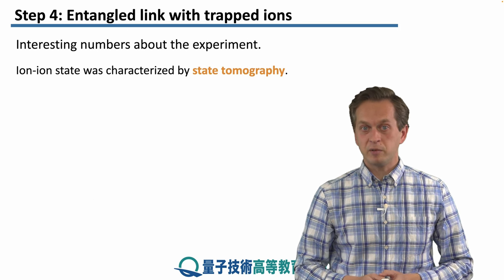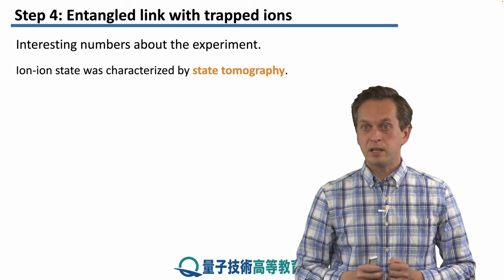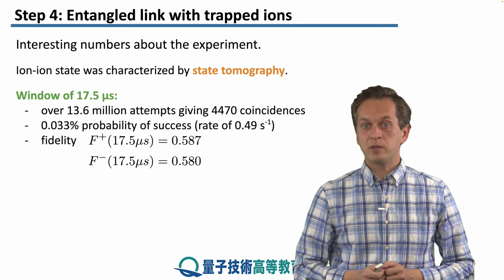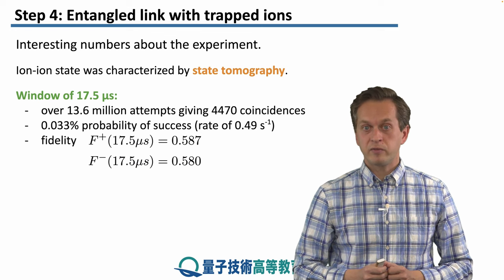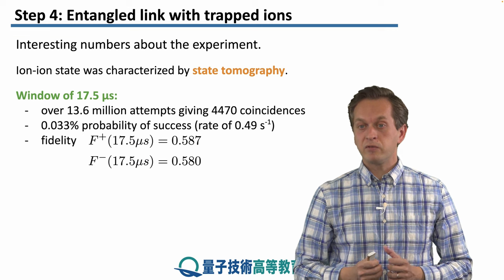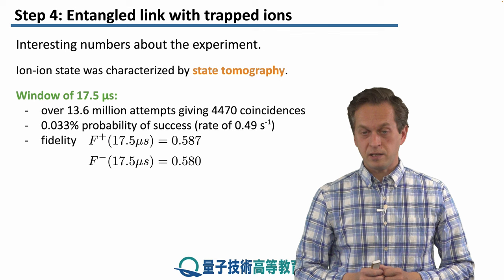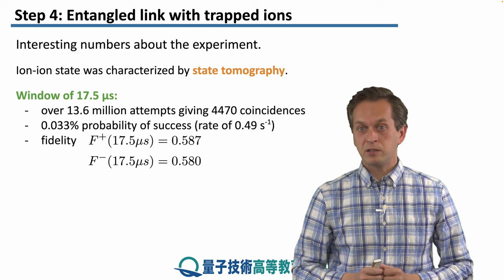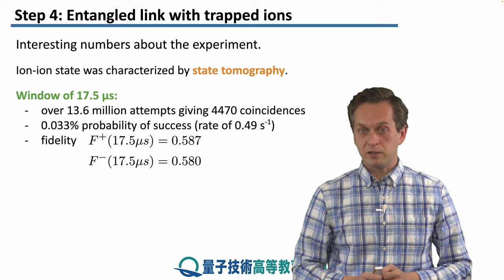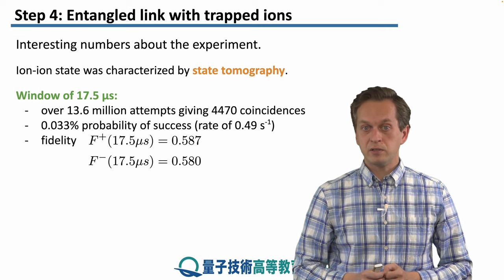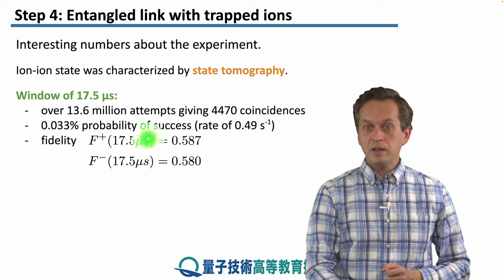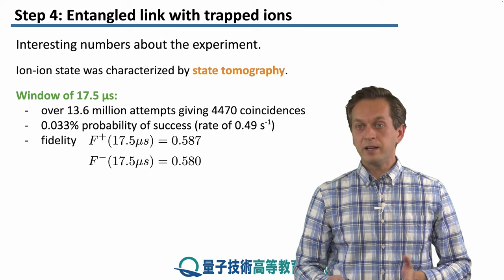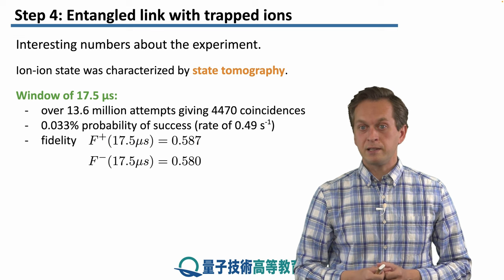Here are some experimental numbers. The ion-ion entangled state was characterized by state tomography, which was used to calculate the fidelity. For a window set to 17.5 microseconds, the experimentalists performed 13.6 million attempts, yielding 4,470 coincidence counts at the BSA. This corresponds to a success probability of only 0.033%, and the generation rate of the entangled link was about 0.5 Hz. The fidelity of the psi-plus projected state was 0.587, and the fidelity of the psi-minus projected state was 0.58.